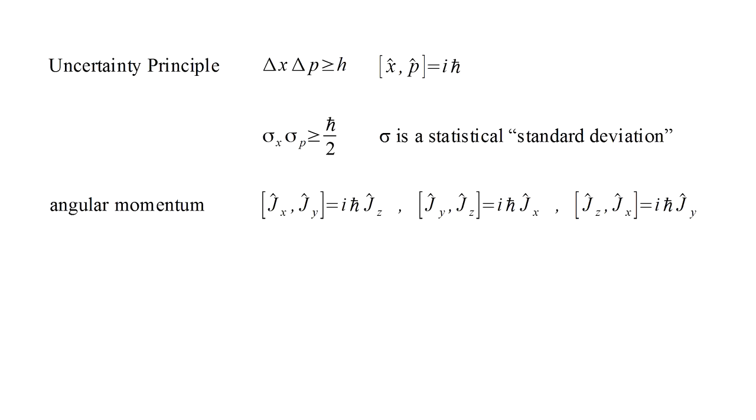Also in the appendix video, we show that for the three components of an angular momentum operator j-hat, the commutator of j-hat x and j-hat y equals i h-bar j-hat z, and the other two similar relations shown.